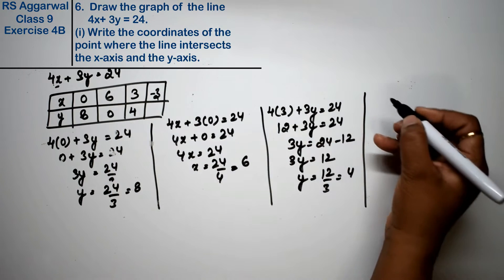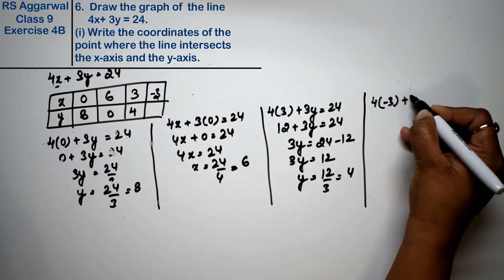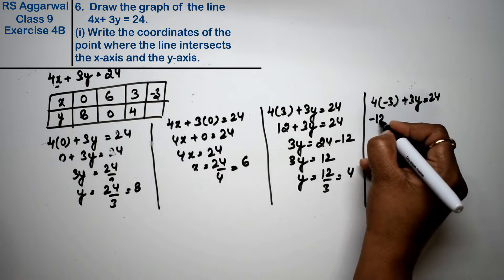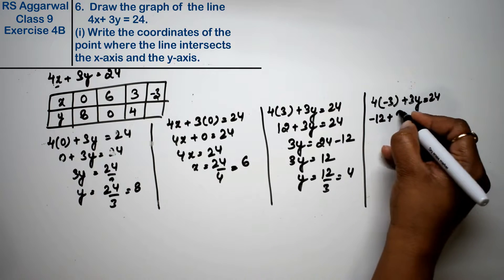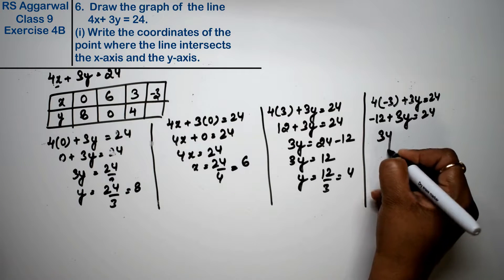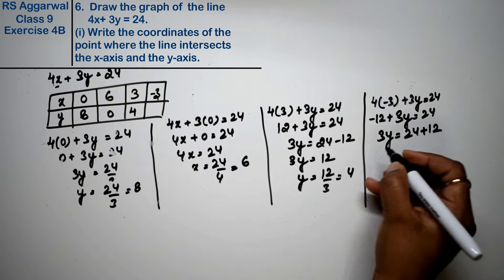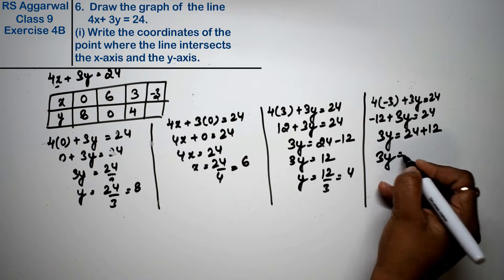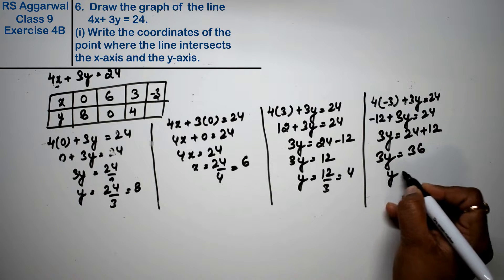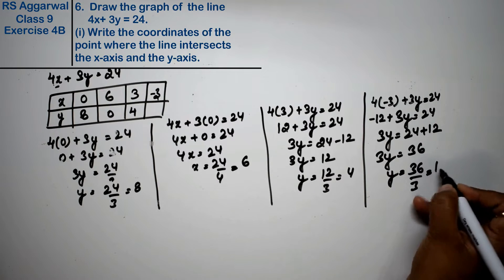We keep x's value as minus 3. So: 4 into minus 3 plus 3y equals 24. That gives minus 12 plus 3y equals 24. So 3y equals 24 plus 12, which means 3y equals 36. Therefore y equals 36 divided by 3, which is 12.